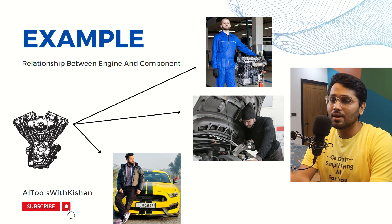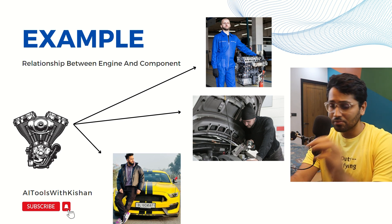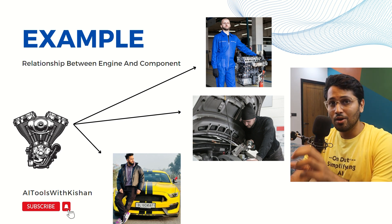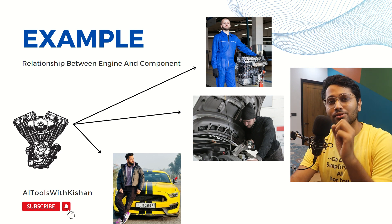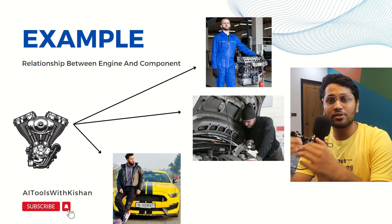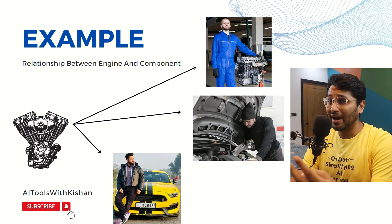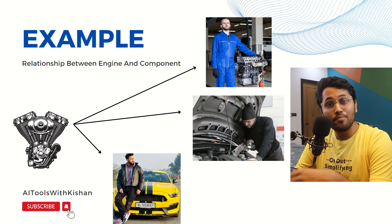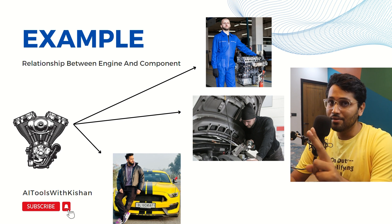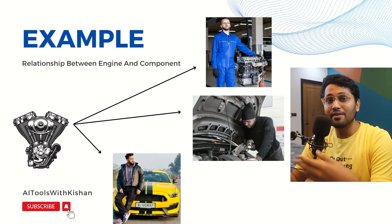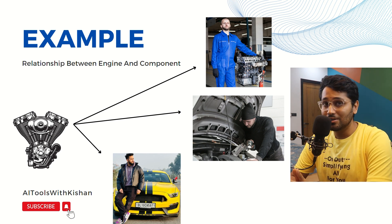Suppose there is a relationship between an engine and a component. Let's take the engine first. The manufacturer of an engine — who puts the money, the energy, and the time to make that engine — is one part, one sector. Then the second layer: the person who uses that engine to make a component, like to make a car. And the third layer is who uses that car to drive, to go on any journey, to go on vacation.